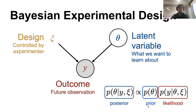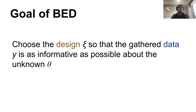We have prior information about what we're trying to learn, a likelihood that dictates the outcomes we'll see given the latent variables and the designs we choose, and a posterior proportional to prior times likelihood in the standard Bayesian way. Our goal is to choose designs that gather the most information. We want to choose designs chi so that our outcomes are as informative as possible about the latents theta — the chi that gives us the widest, most informative outcomes about theta.